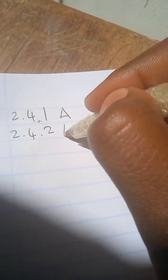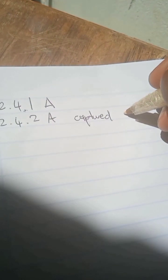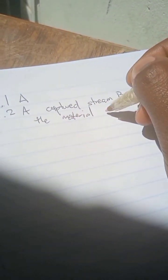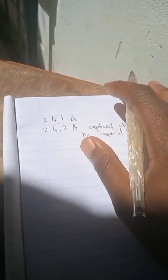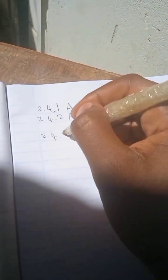For question 2.4.2, give one reason evident in the sketches to support your answer. The reason: because river A captured stream B according to the sketch, it must have removed the material making up the watershed. In order to do so, it must have had more erosive power.